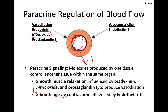Of all of these, nitric oxide is the most important to know. This is the gas used by dentists, known as laughing gas. More importantly, it is produced by our own tissue, and this nitric oxide causes the vasodilation that regulates flow on a localized area.